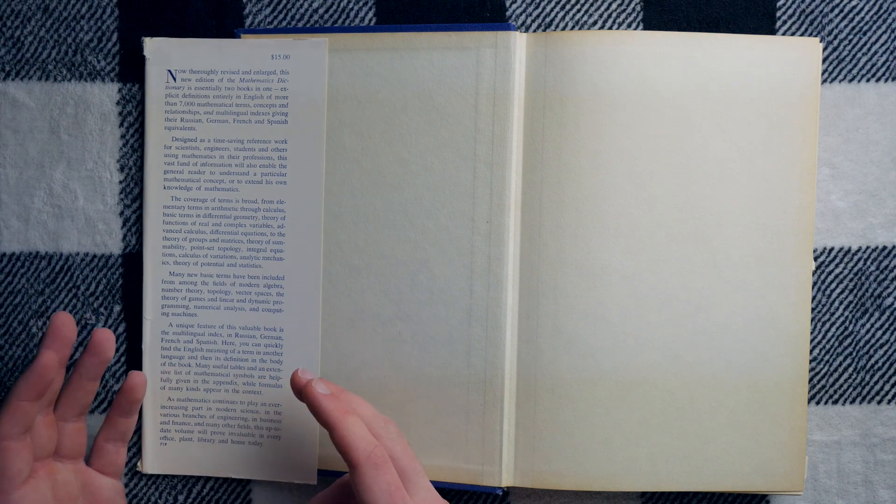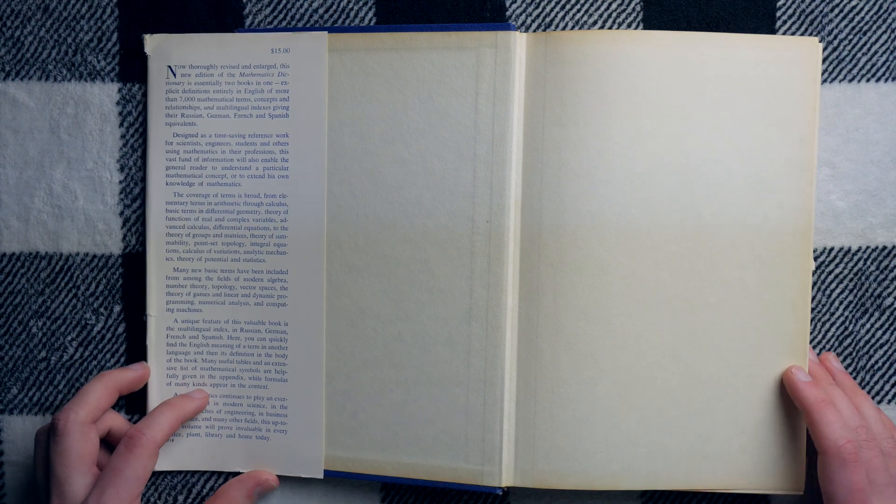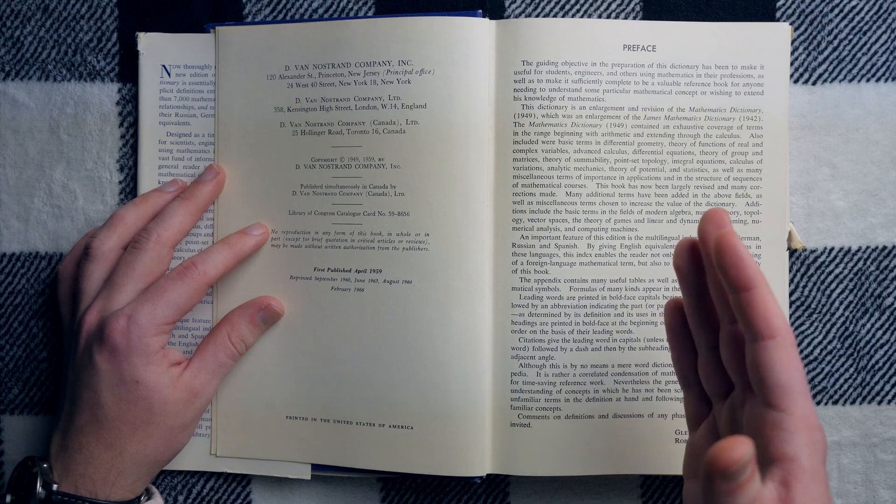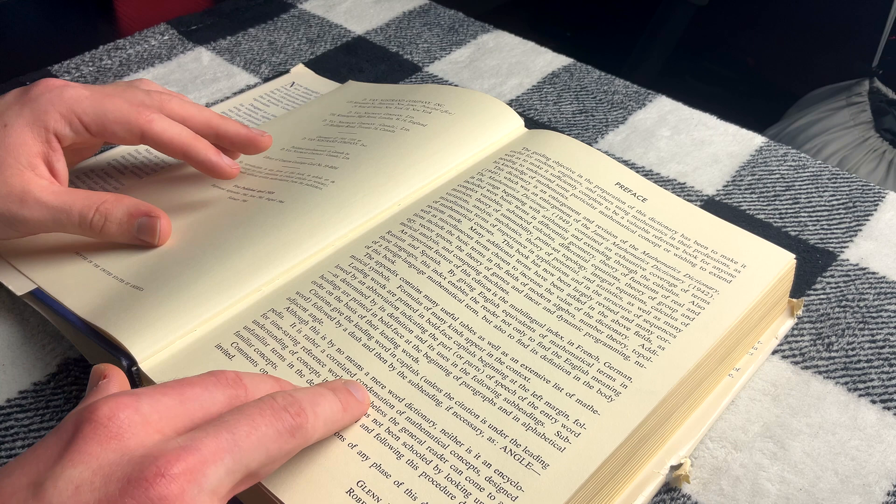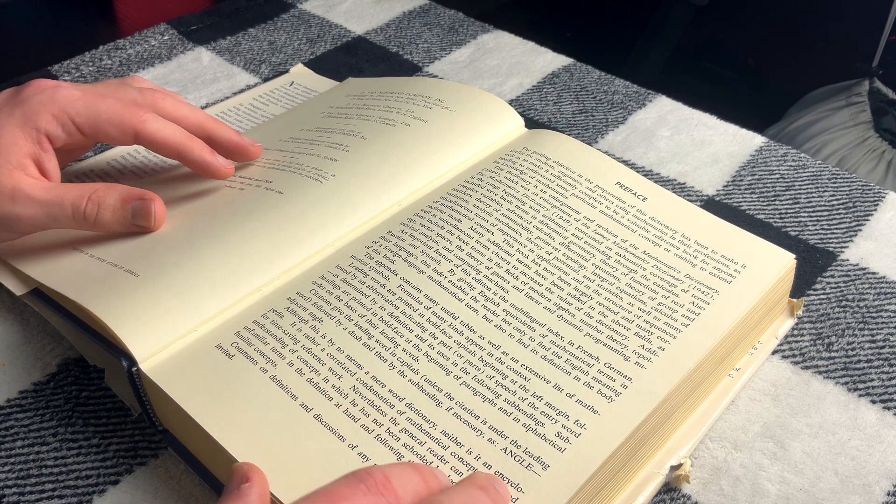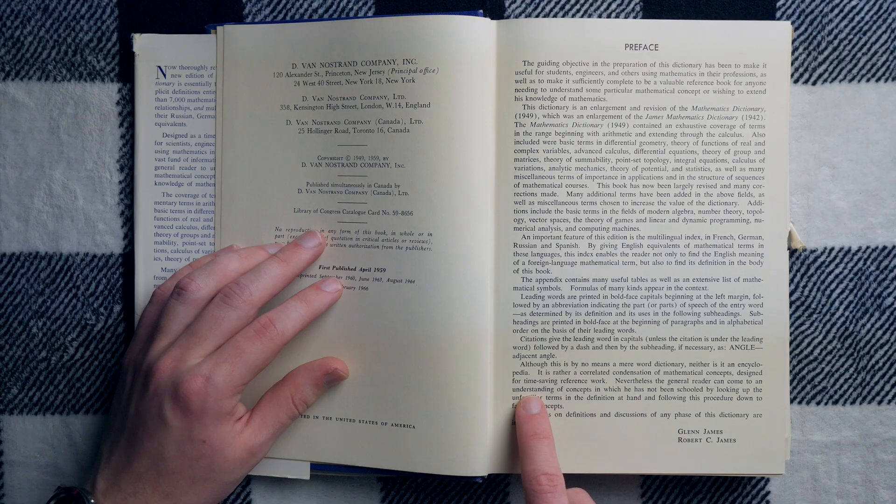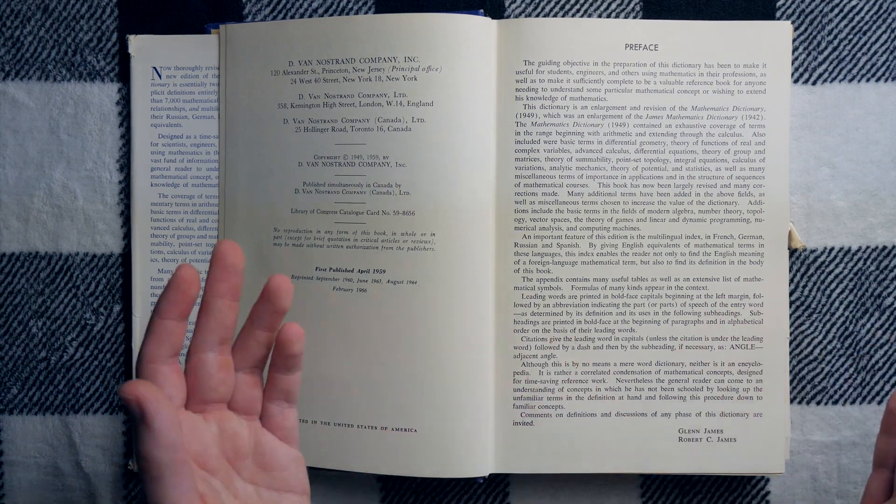We also get a mention here about the multilingual index in Russian, German, French, and Spanish. So you can quickly find the English meaning of a term in another language and then you can go to its definition in the body of the book. You've also got a bunch of tables and stuff in the back of the book as well. Let's just take a flip through some of the main pages here though.